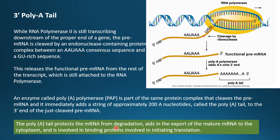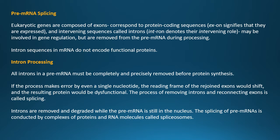The poly-A tail protects the mRNA from degradation and aids in the export of mature mRNA to the cytoplasm. Both the 5' cap and the 3' poly-A tail are involved in initiation of translation and also protect the pre-mRNA from degradation. Now, with capping and poly-A tail addition complete, we move to the third step: pre-mRNA splicing.